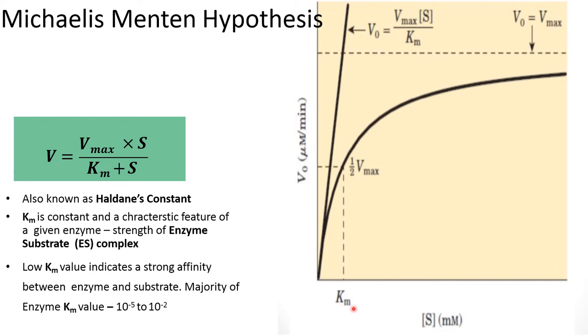KM is a constant and a characteristic feature of a given enzyme. For example, strength of the enzyme substrate complex: lower the KM value indicates a strong affinity between the enzyme and the substrate.